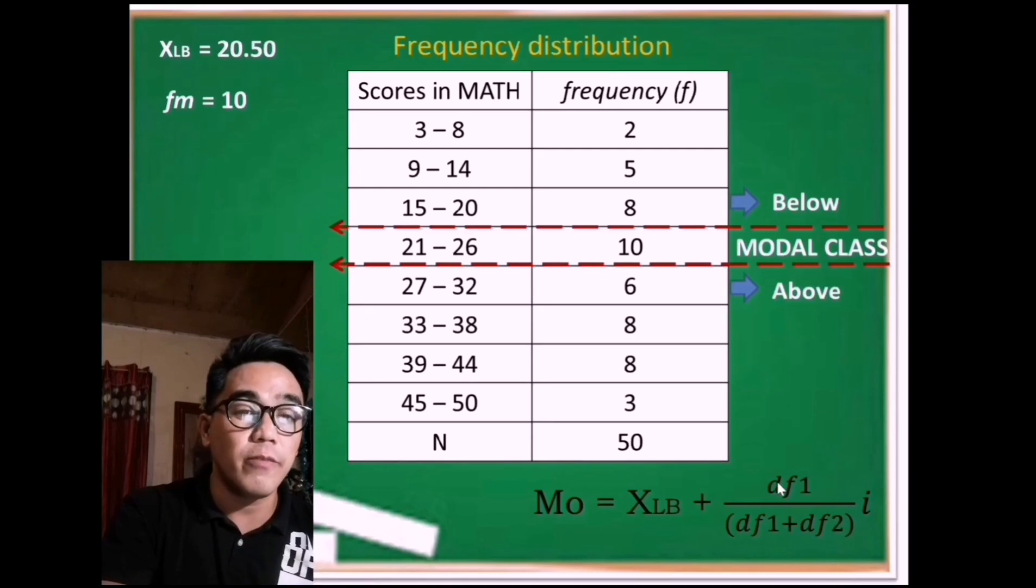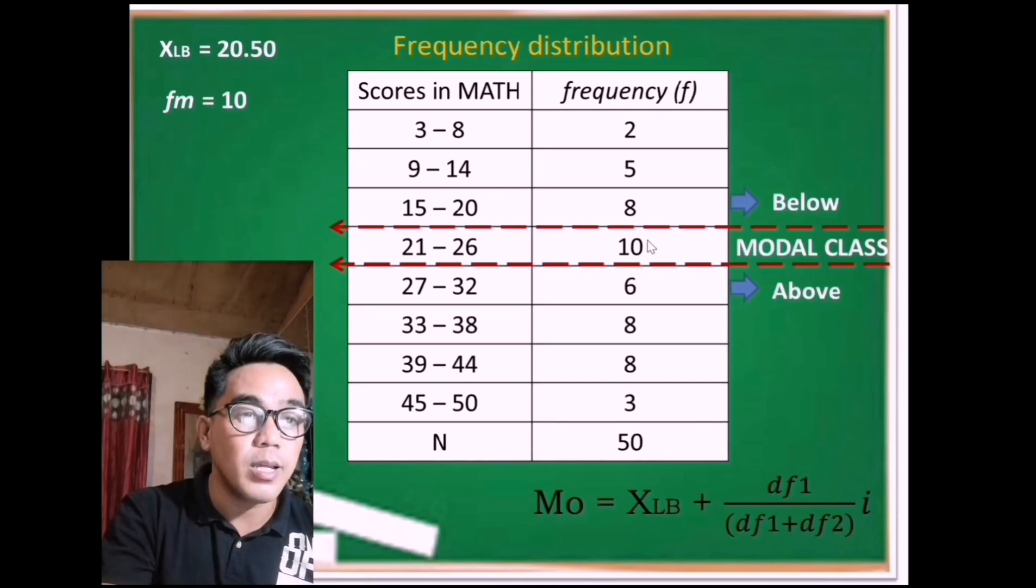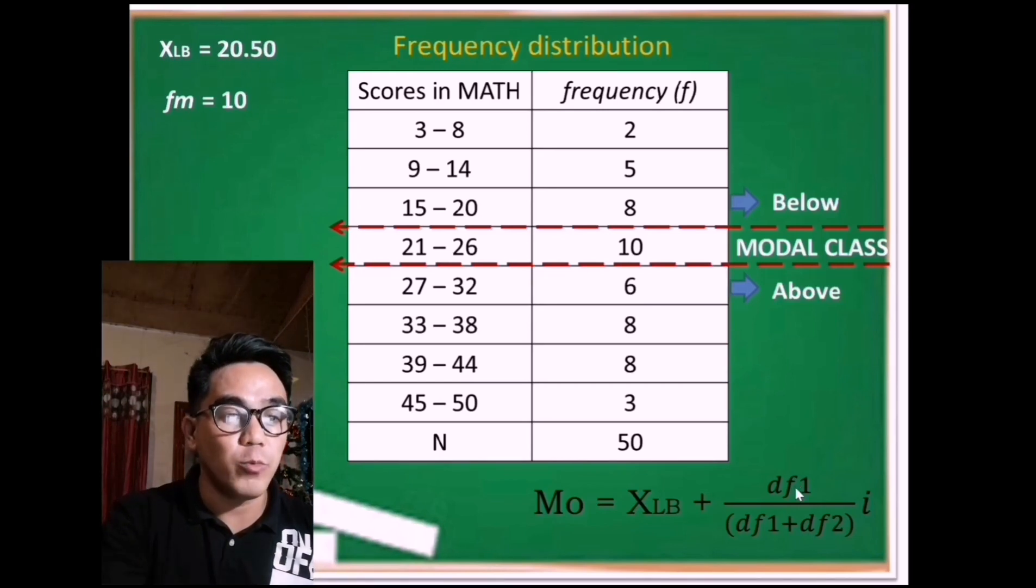Right now, we can determine the df sub 1, which is the difference between the frequency of the modal class and the frequency above it. Is it 6 or 8? Definitely 6. Therefore, df sub 1 is the difference between 10 and 6. 10 minus 6 is 4.